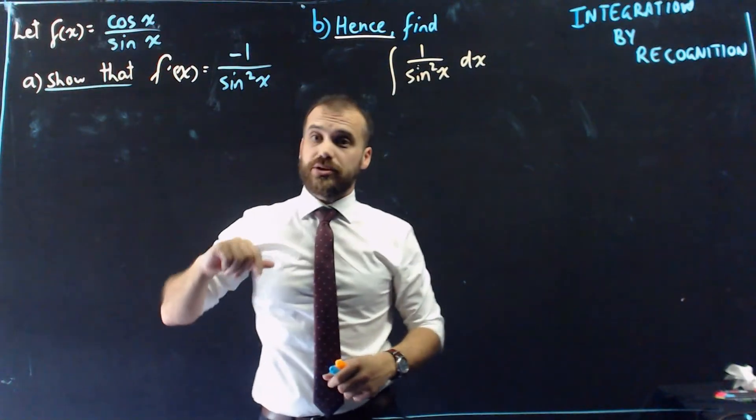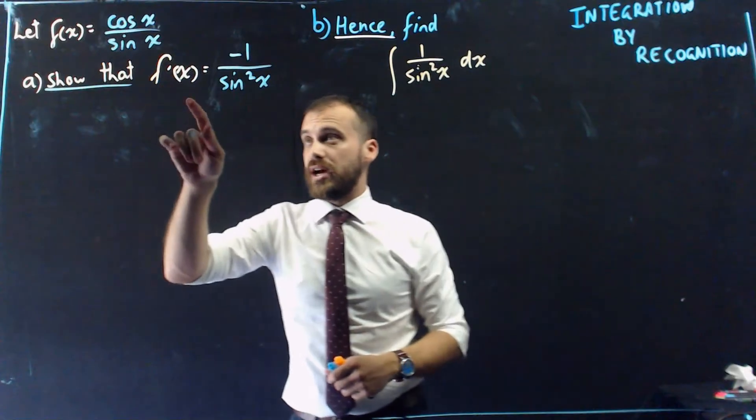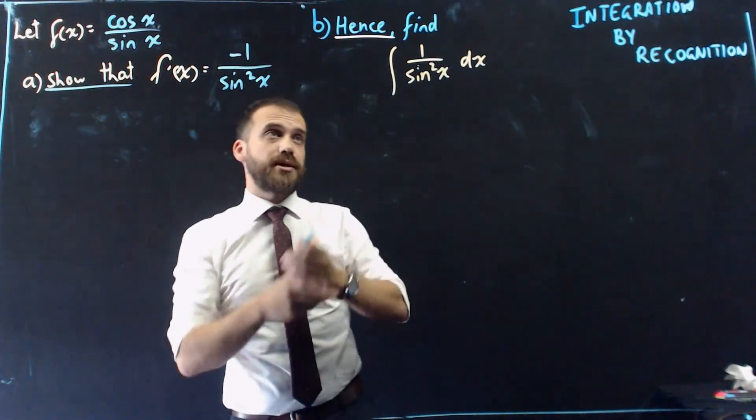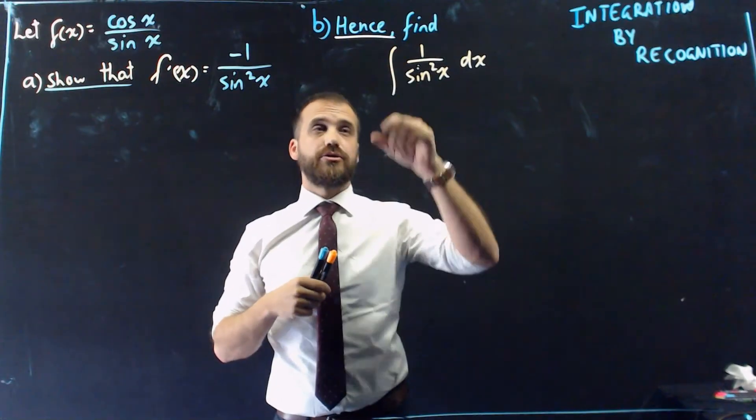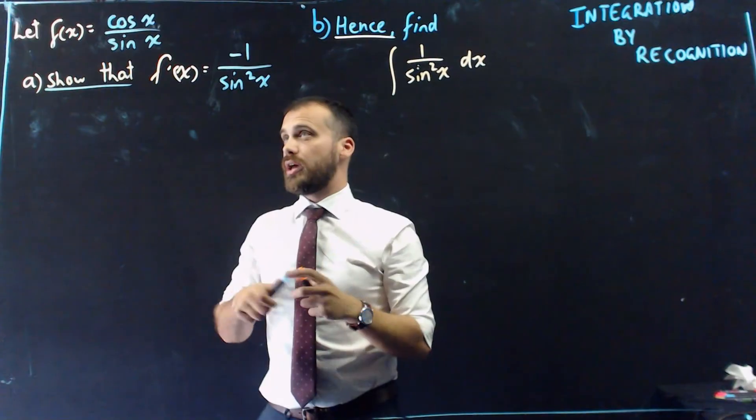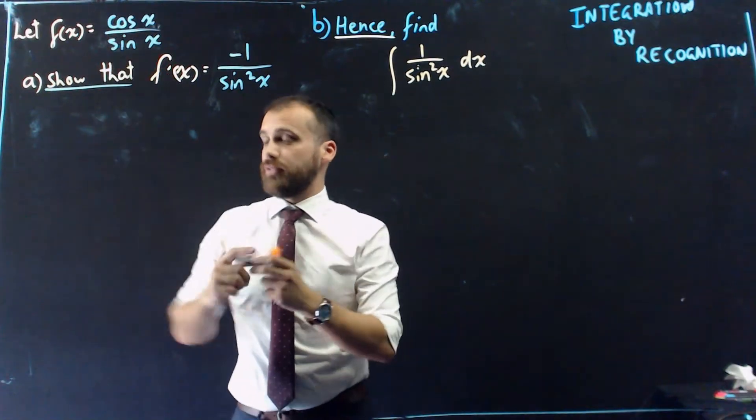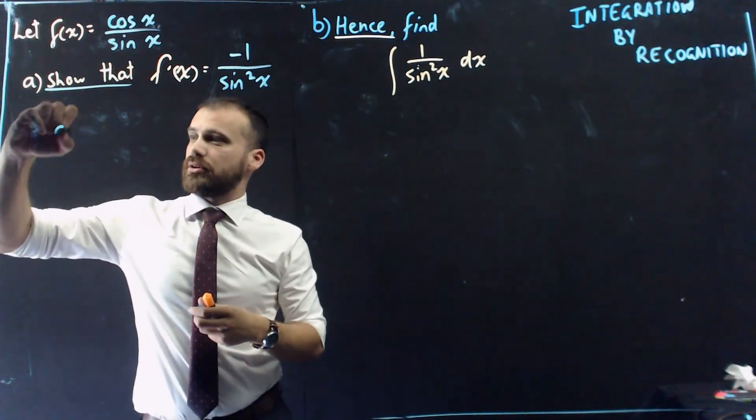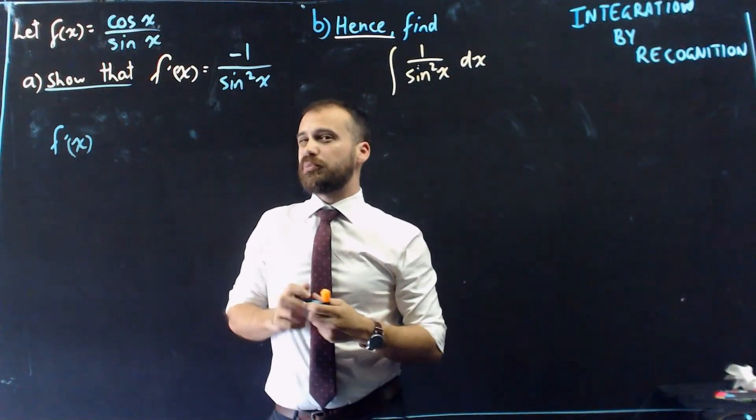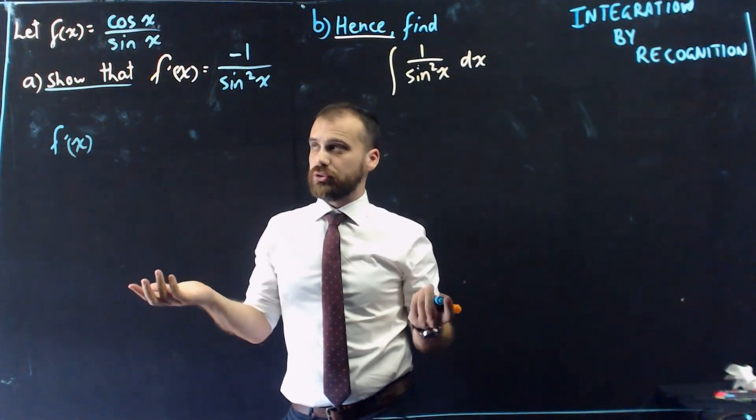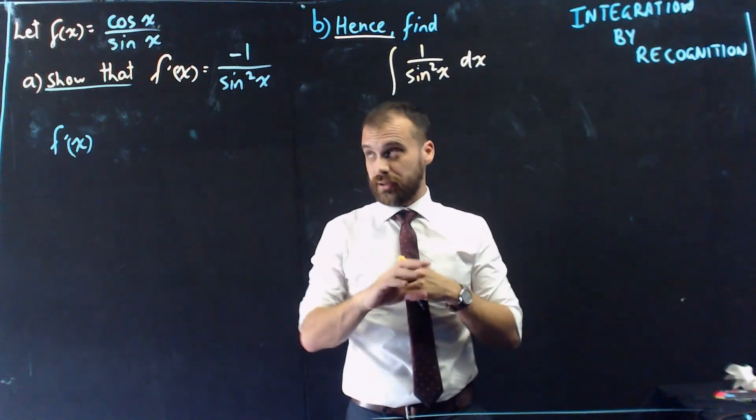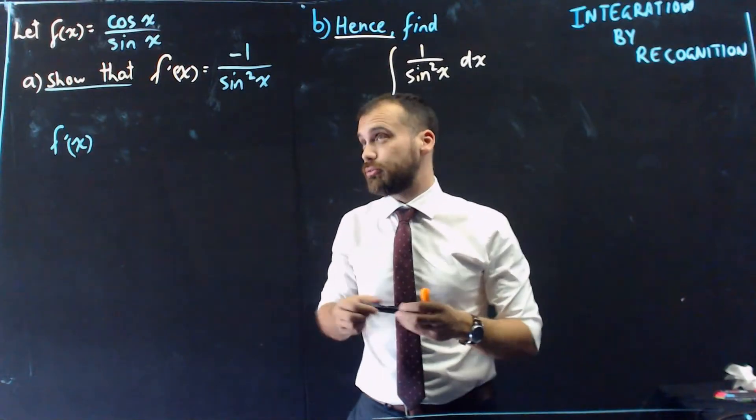Let f of x equals cos x on sine x. Show that f dash x equals negative 1 on sine squared x, that's part A, and then part B will be hence, find the integral of 1 on sine squared x with respect to x. Okay, so how am I going to find the derivative of that? So I'm going to do f dash x, and then it looks like it's probably like a quotient rule style question. So I'm just going to try to go through that really fast. You know how to do the quotient rule already.